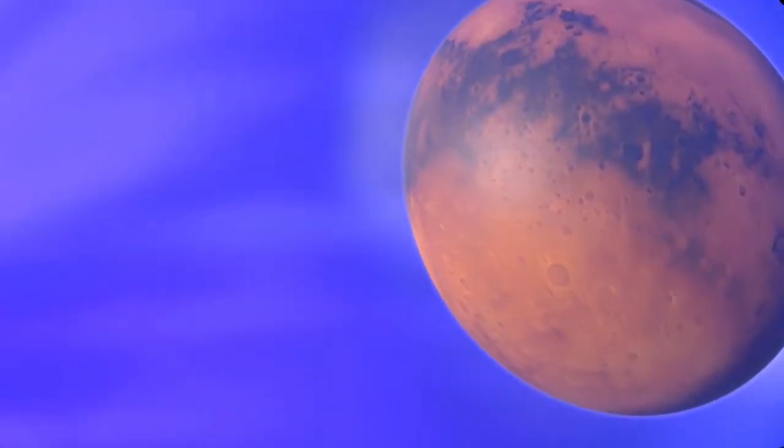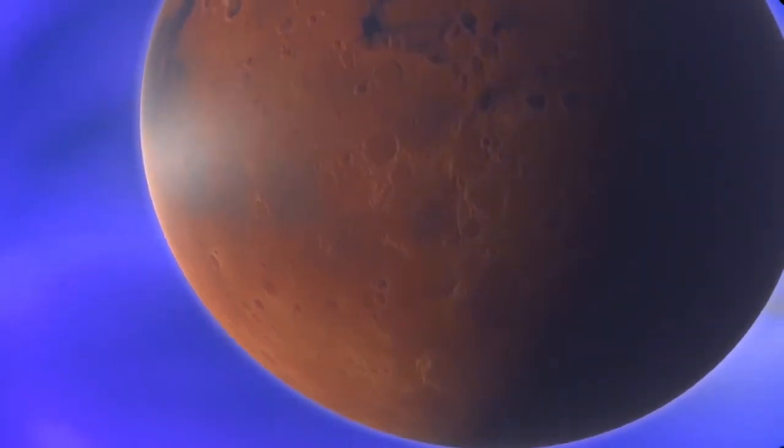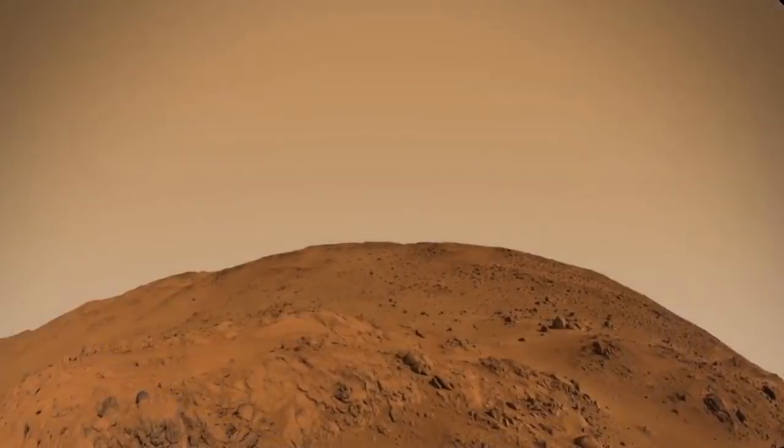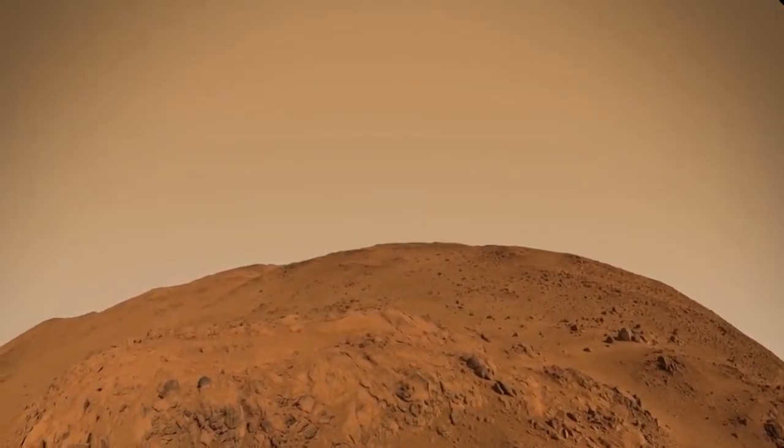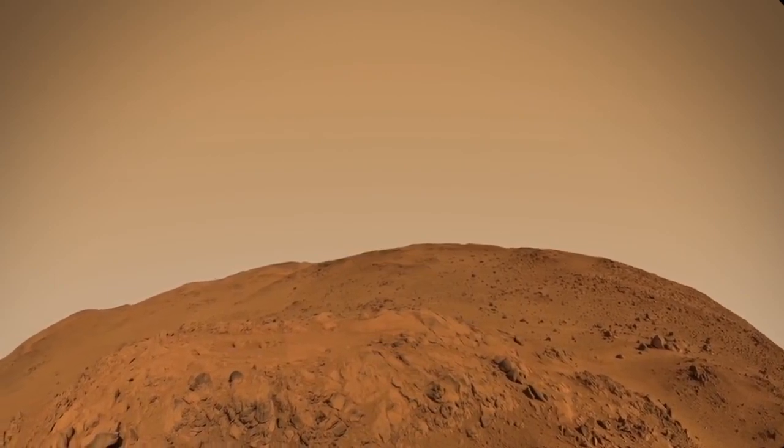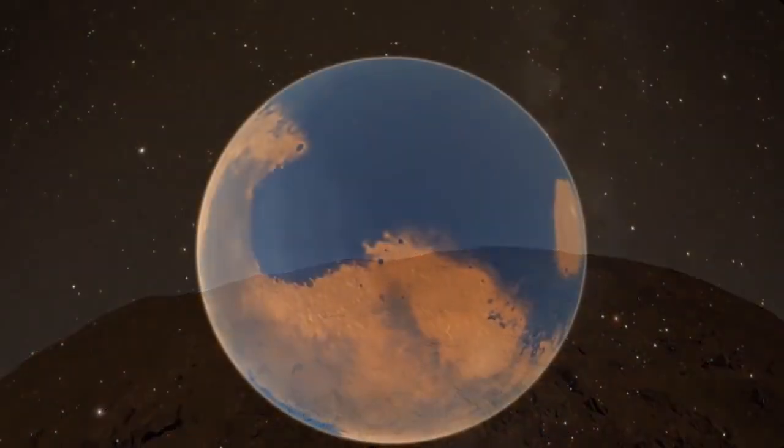Although its rotation is fast enough, Mars lacks a liquid iron core to create a global magnetic field. Without a magnetic shield, the solar wind reaches the planet's thin atmosphere and has robbed Mars of most of its hydrogen and oxygen. Mars is now a dry desert, but it has features indicating that the red planet once had surface water and an atmosphere thick enough to support a water cycle, seas, and perhaps life.